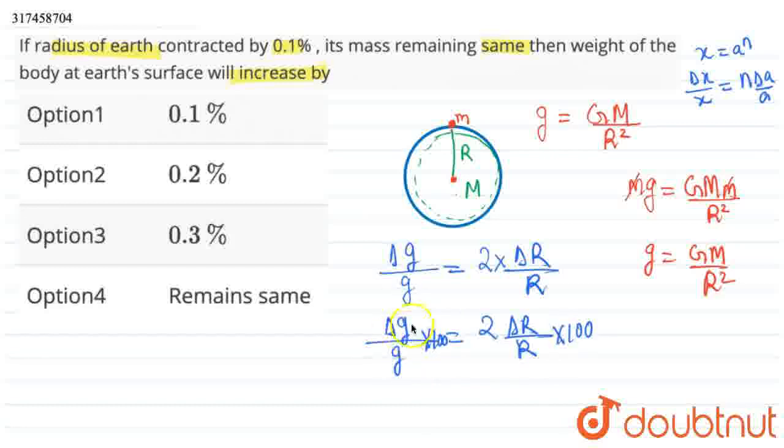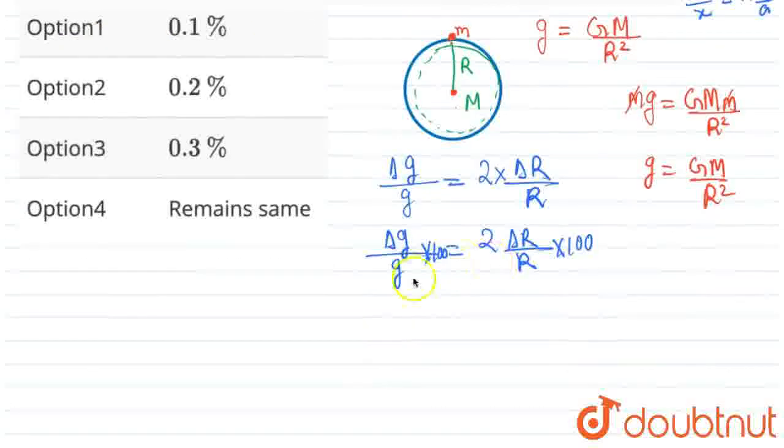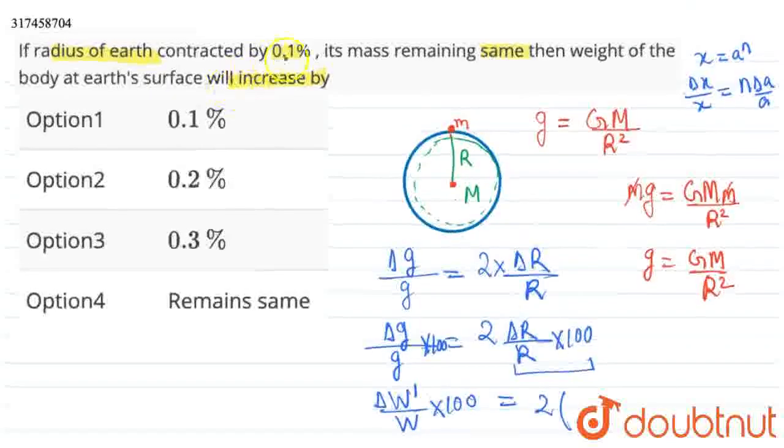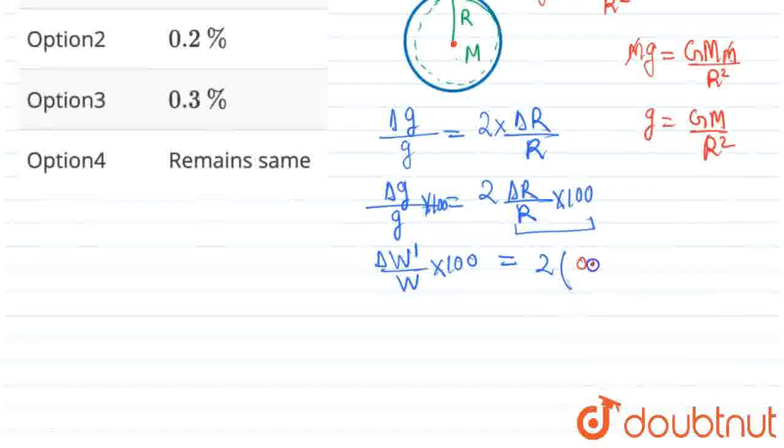Now we don't need percentage change in acceleration due to gravity, we need to find weight. So multiply both sides by mass, I mean multiply top and bottom by mass. So we get delta W upon W into 100 equals 2 times the percentage change in radius. We have this as 0.1%, so putting that in, this becomes 0.1%.